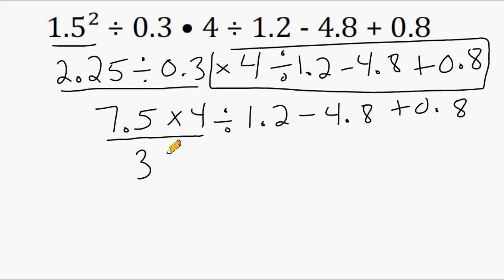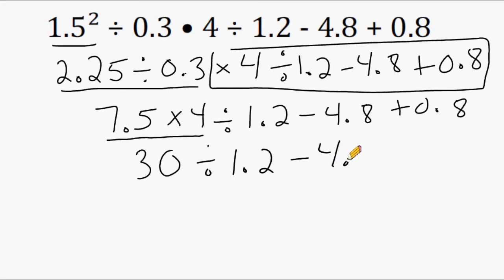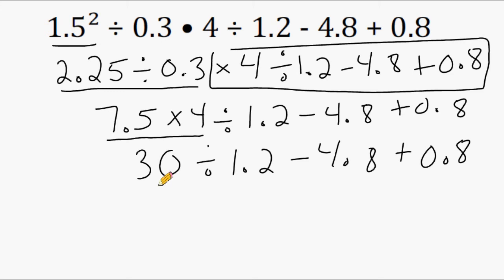So right beneath this part of our expression I'm going to write 30 and then bring down the rest of our expression. Now we go back to the beginning of our expression and look for any multiplication or division, and we just have one of those signs left: 30 divided by 1.2. So we're going to take 30 and divide that by 1.2.